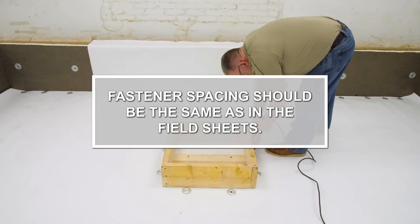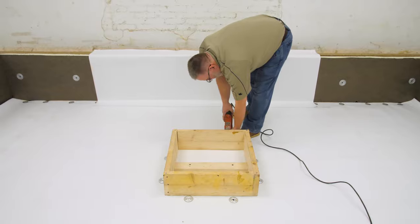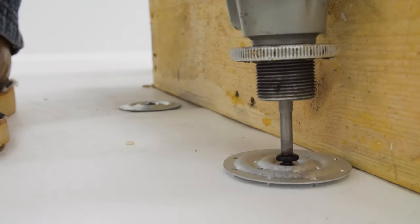Fastener spacing should be the same as in the field sheets. Install either number 14 HDP or number 15 EHD screws in each plate.